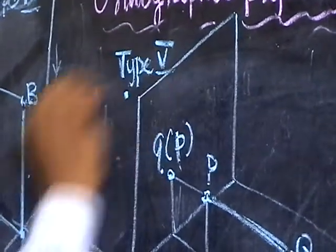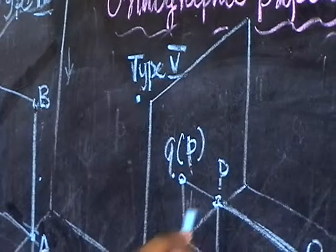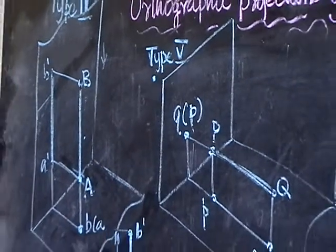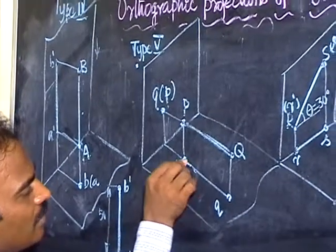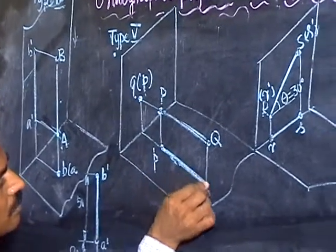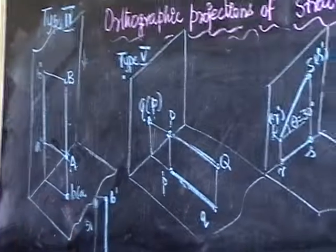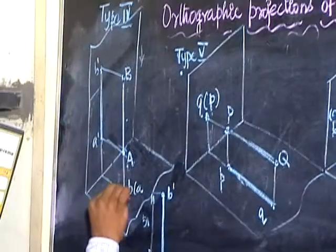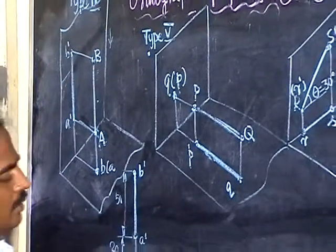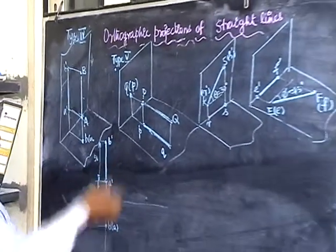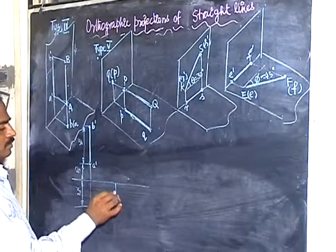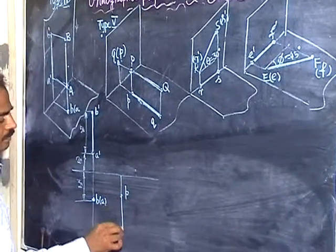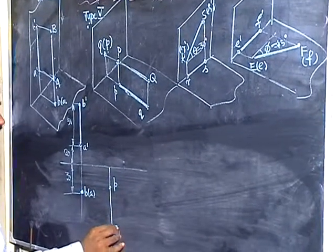So again similar. Here the straight line is parallel to HP. But the point on BP. Here you are getting true length on BP and the point on HP. So once again you take this. Take the in front of distance. Plot the point P. Take the true length. Finish the straight line Q.